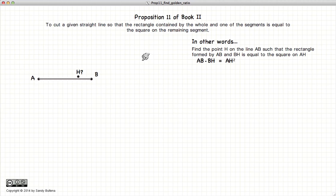This proposition gives us the methods to find a point H on a line AB such that AB times HB will be equal to AH squared. So, how do we do that?